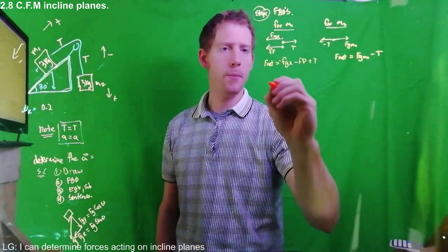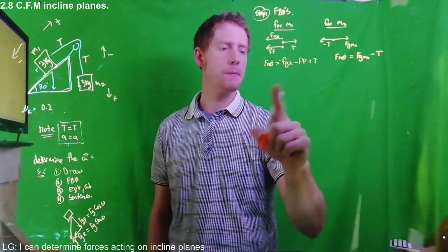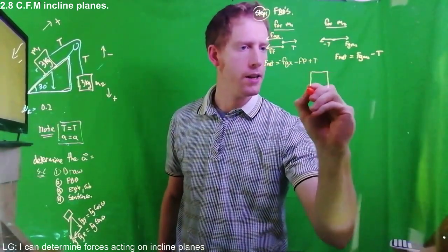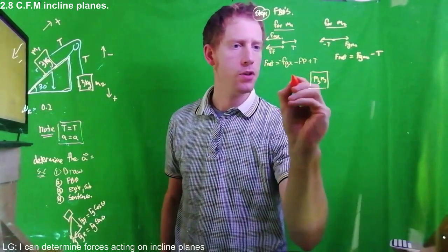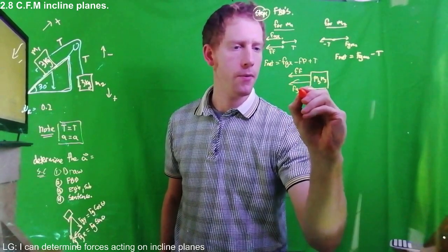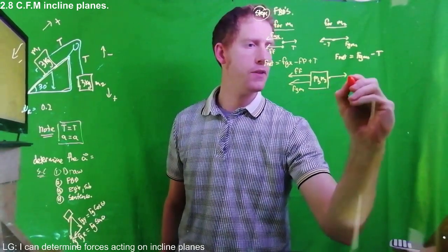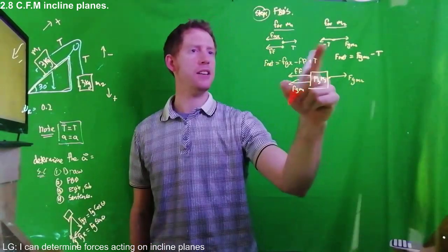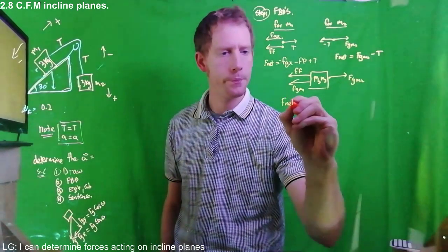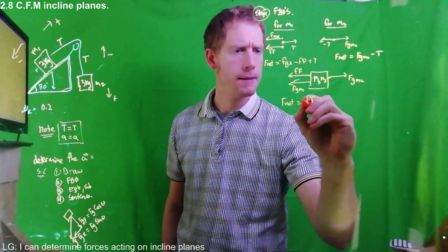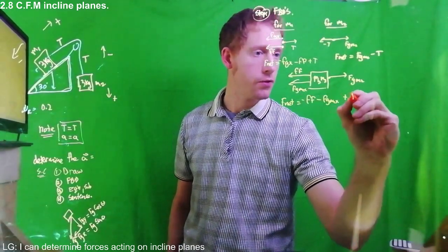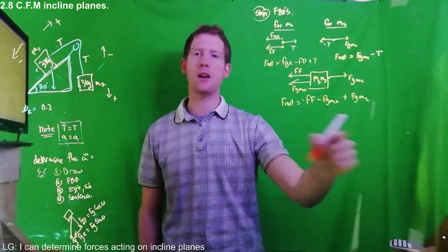We can expand the equation further. Since the two tensions cancel each other out, we can combine this system into one diagram where the total mass is M1 + M2. The combined equation is just: F_net total = −F_friction − Fg(M1) in the X direction + Fg(M2). So this becomes our master equation for the system.